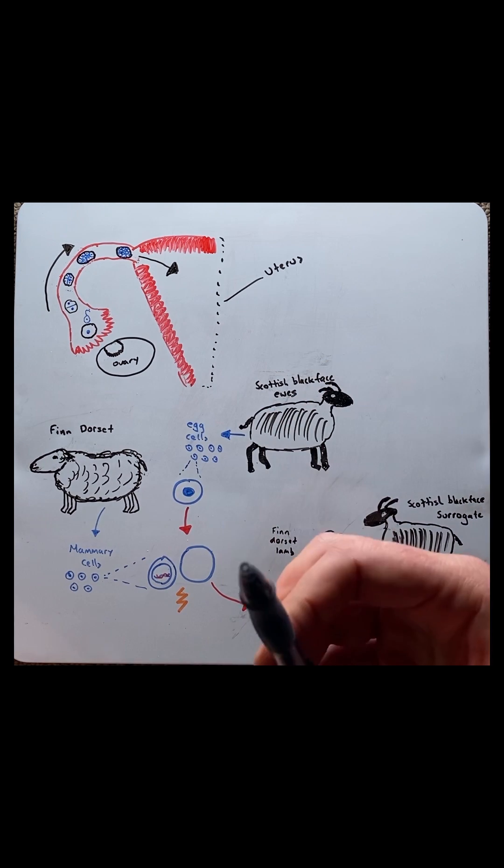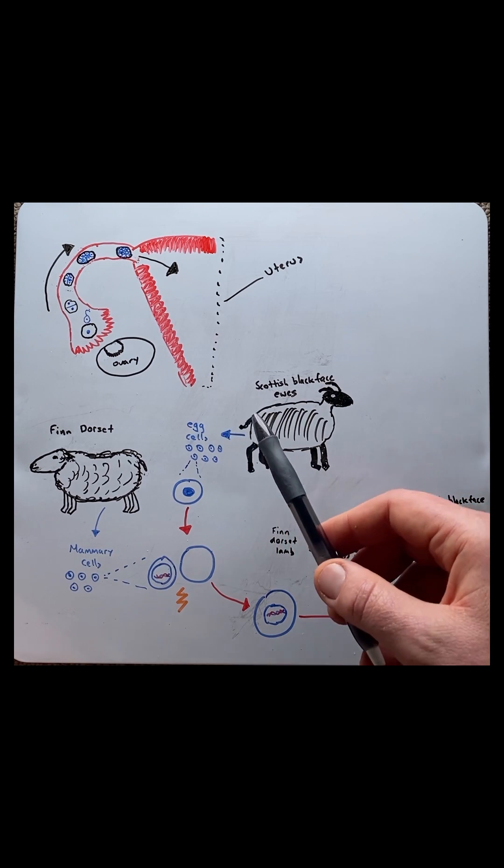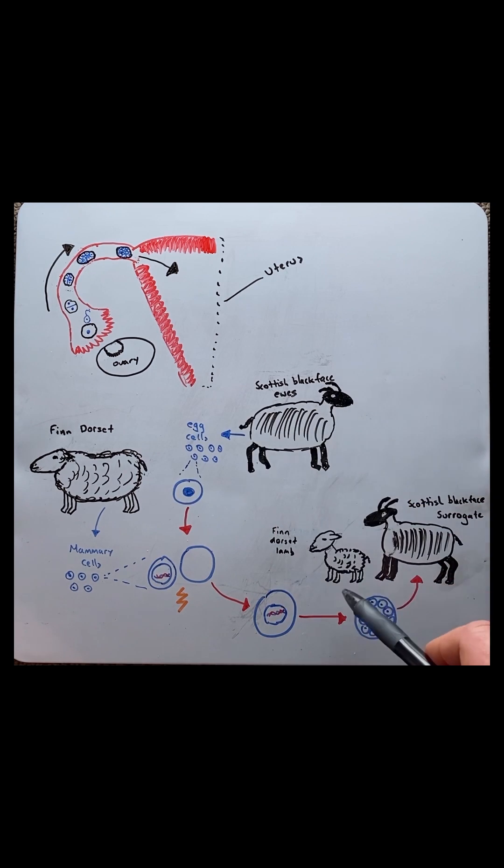But how is cloning different? In 1996 Ian Wilmut and his team produced a sheep clone known as Dolly.